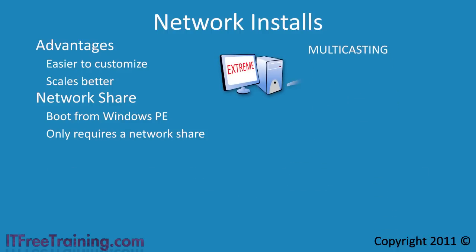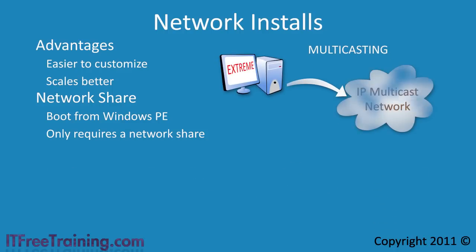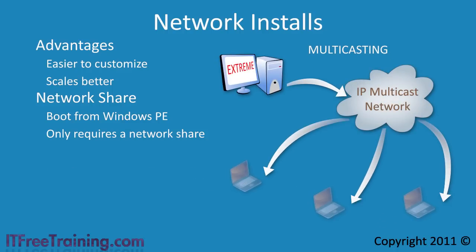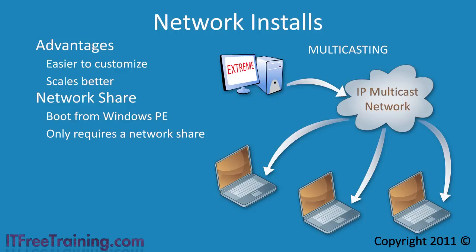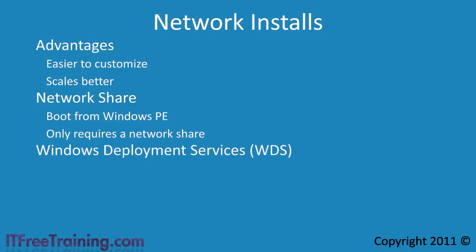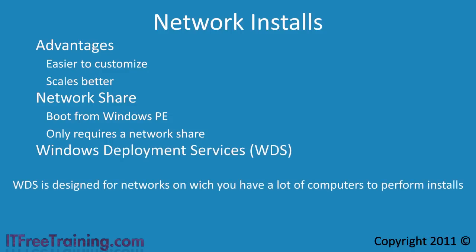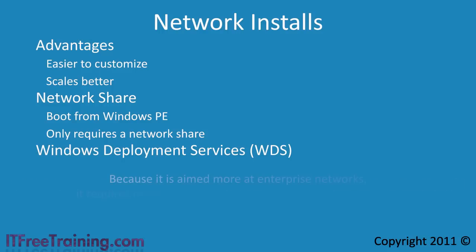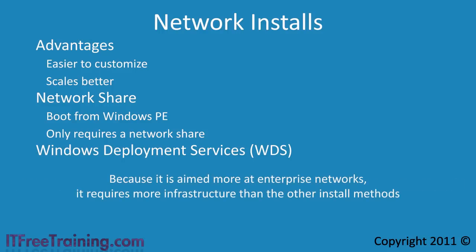Multicasting allows the same packet of data to be sent on the network to many different computers. If you want to be able to use multicast, you will need to use a system like Windows Deployment Services, otherwise known as WDS. WDS is designed for networks on which you have a lot of computers to perform installs. Because it is aimed more at enterprise networks, it requires more infrastructure than the other install methods.